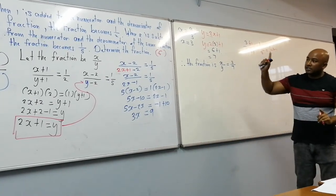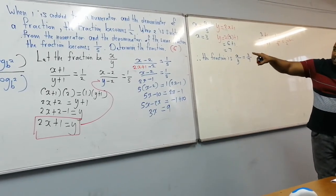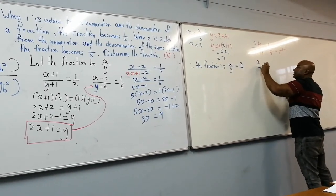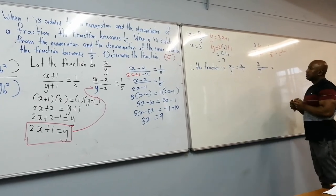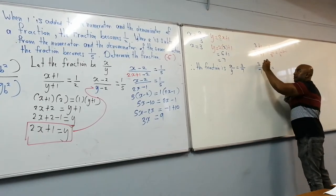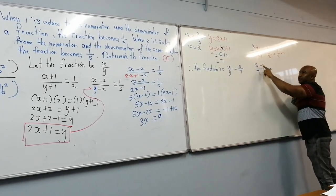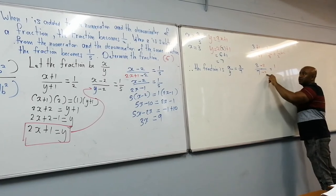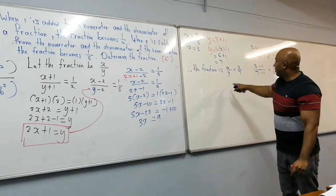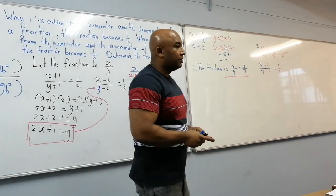Checking the second statement: subtracting 2 from numerator and denominator of 3 over 7 gives 3 minus 2 over 7 minus 2, which is 1 over 5. The answer is verified — the fraction is 3 over 7. Always check your answer after solving.